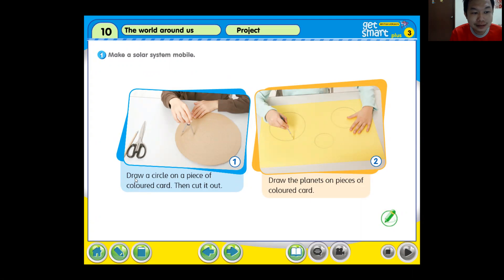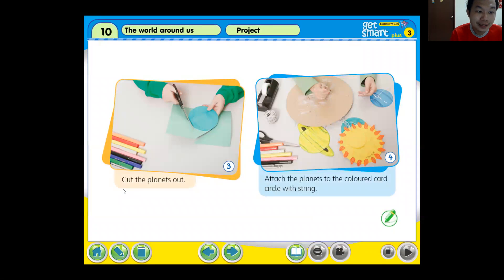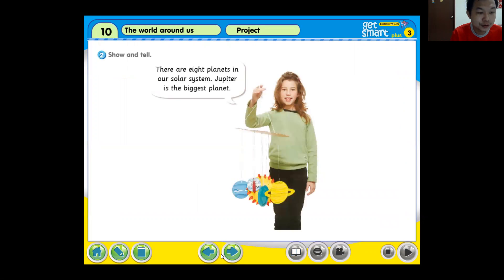Draw a circle on a piece of colored paper and cut it out. Draw the planets on a piece of colored paper as well. Cut the planets out. Attach the planets to the colored circle with string.